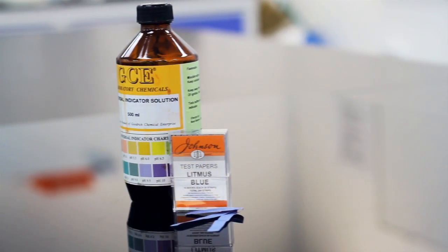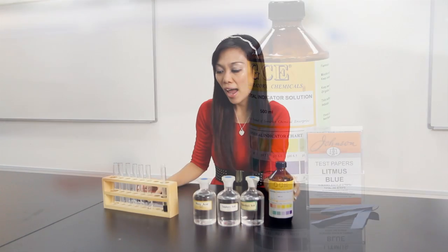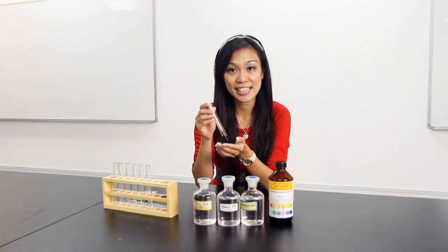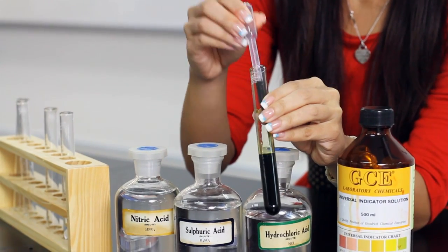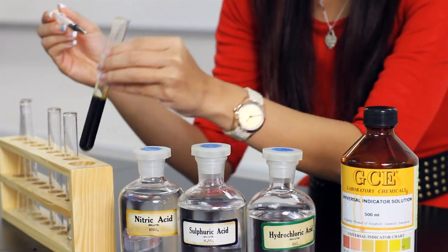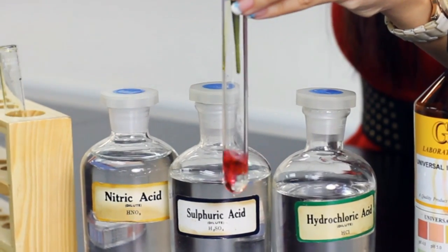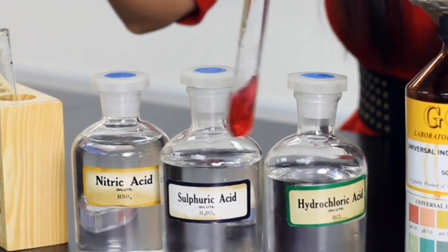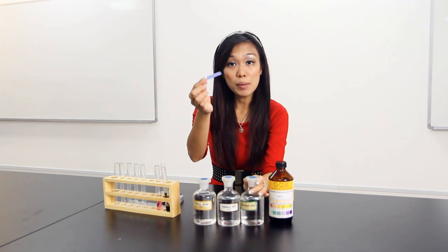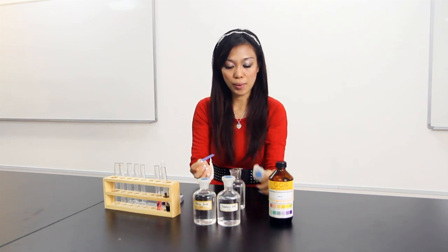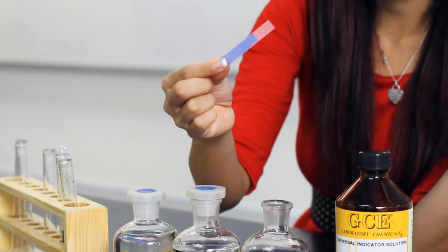You can use universal indicator or a litmus paper to test it. I have with me here universal indicator. It looks green because when it's neutral, it's supposed to be green. If I react it with acid, it turns red. If blue litmus paper touches hydrochloric acid, it turns red.